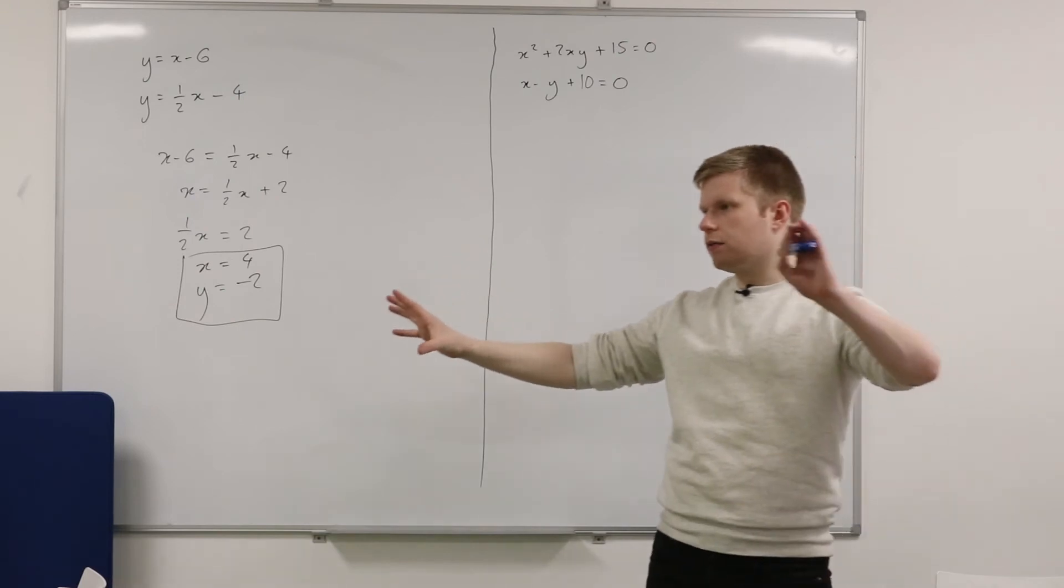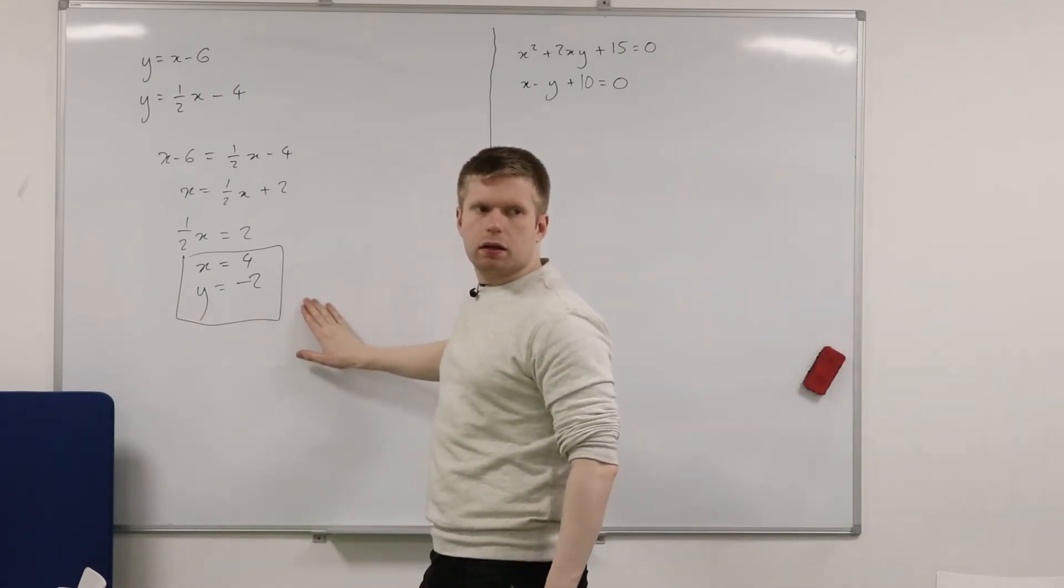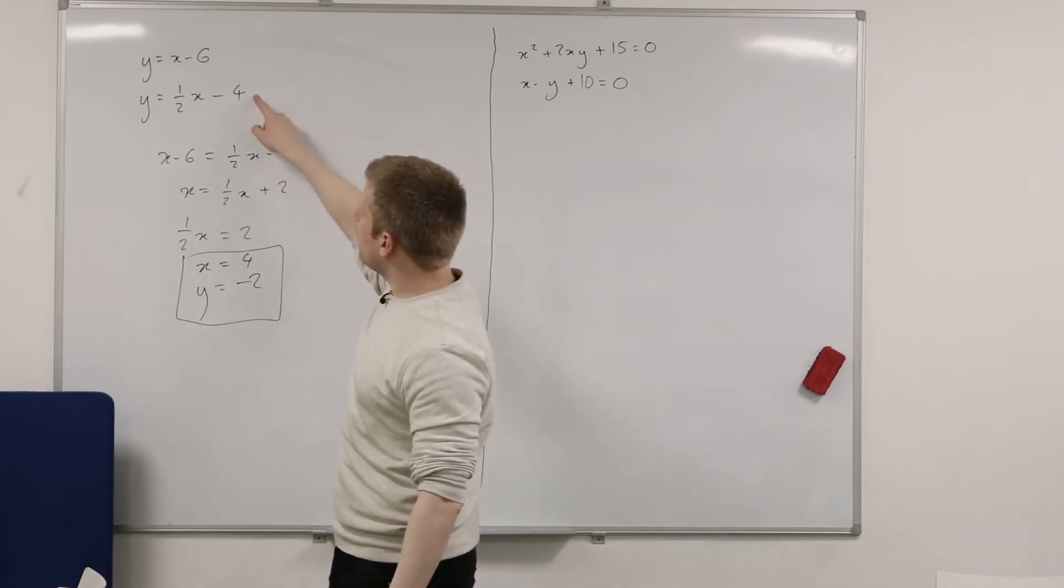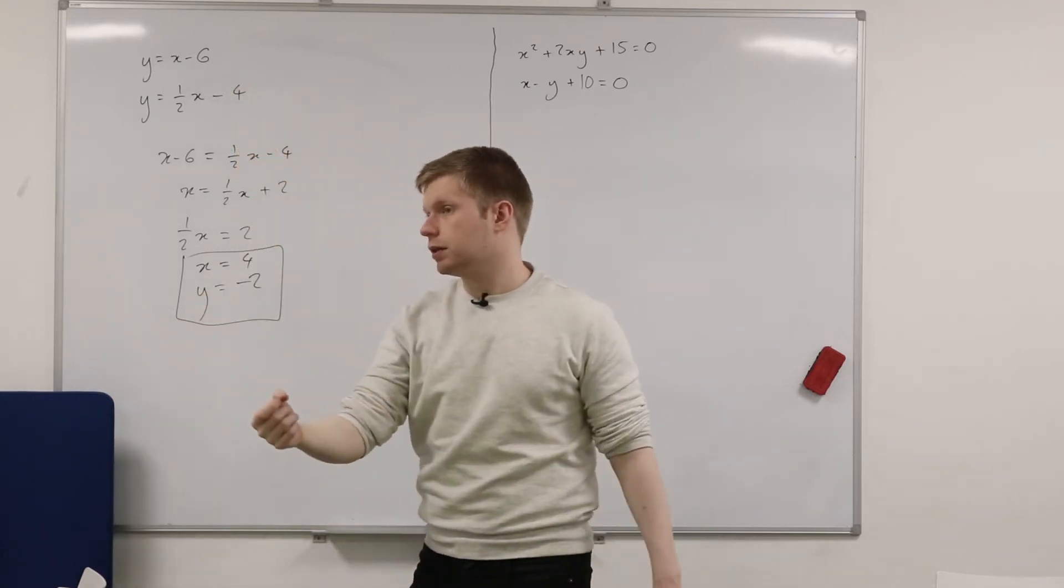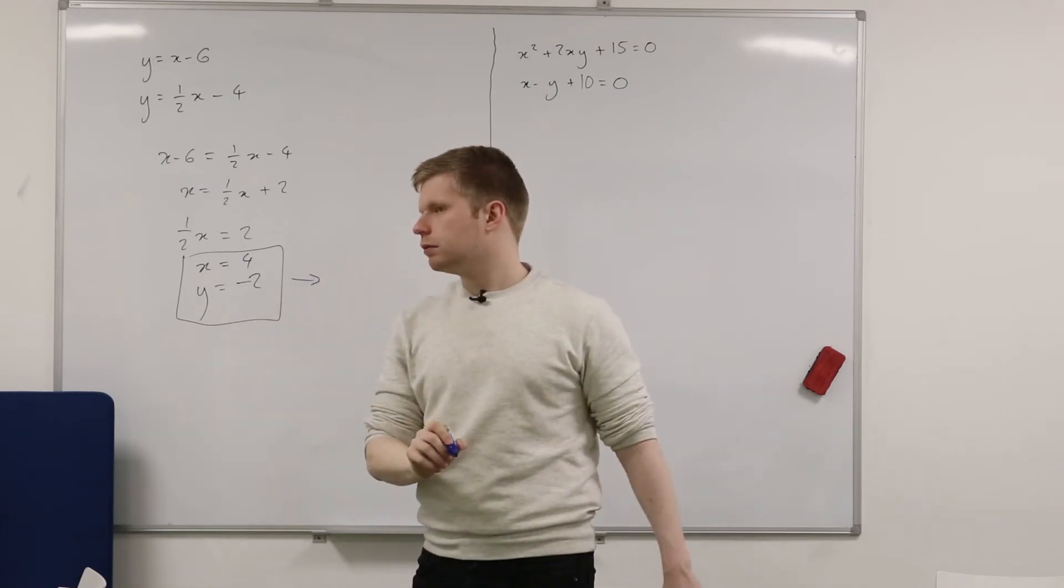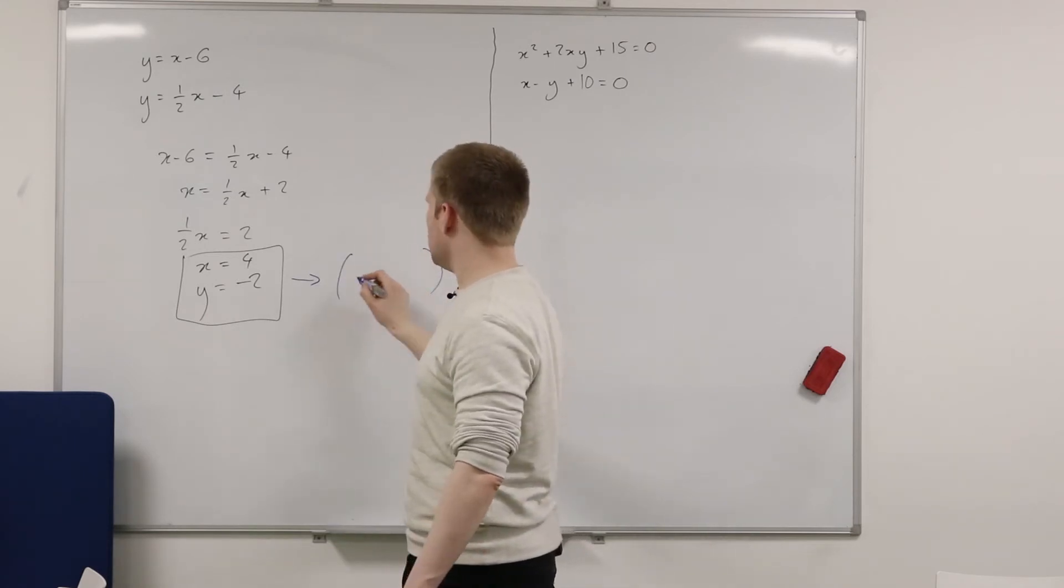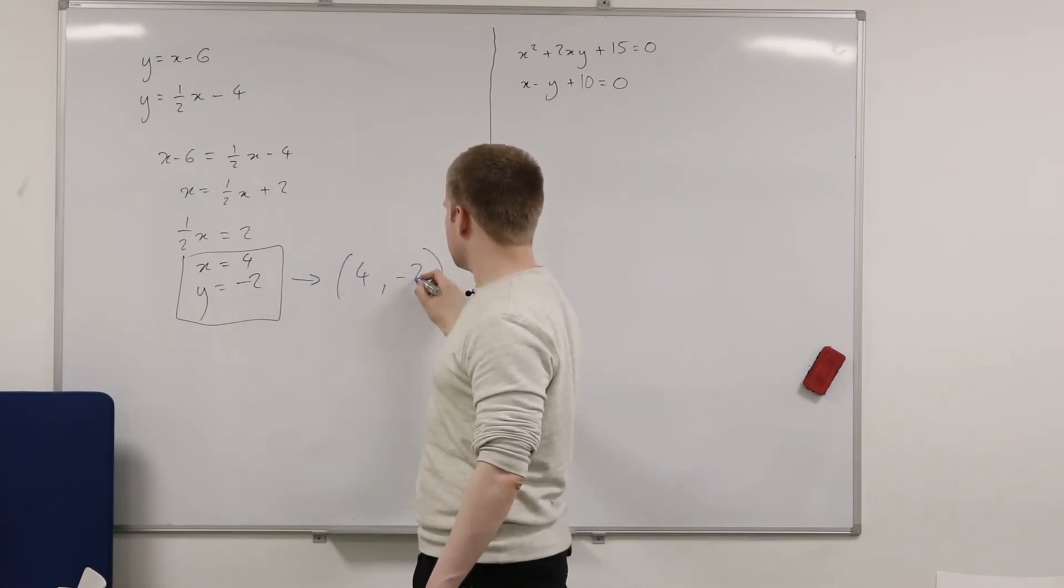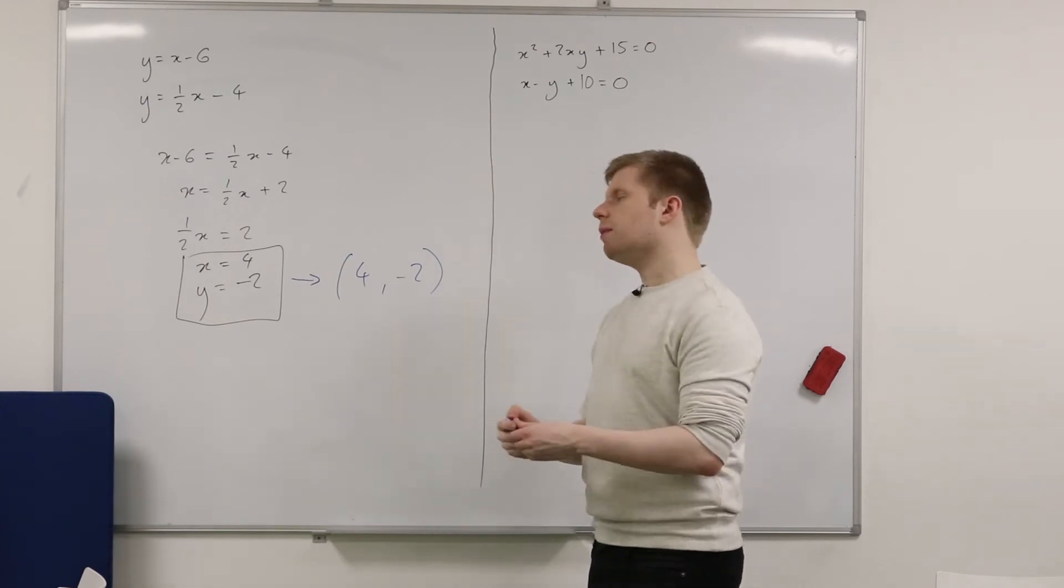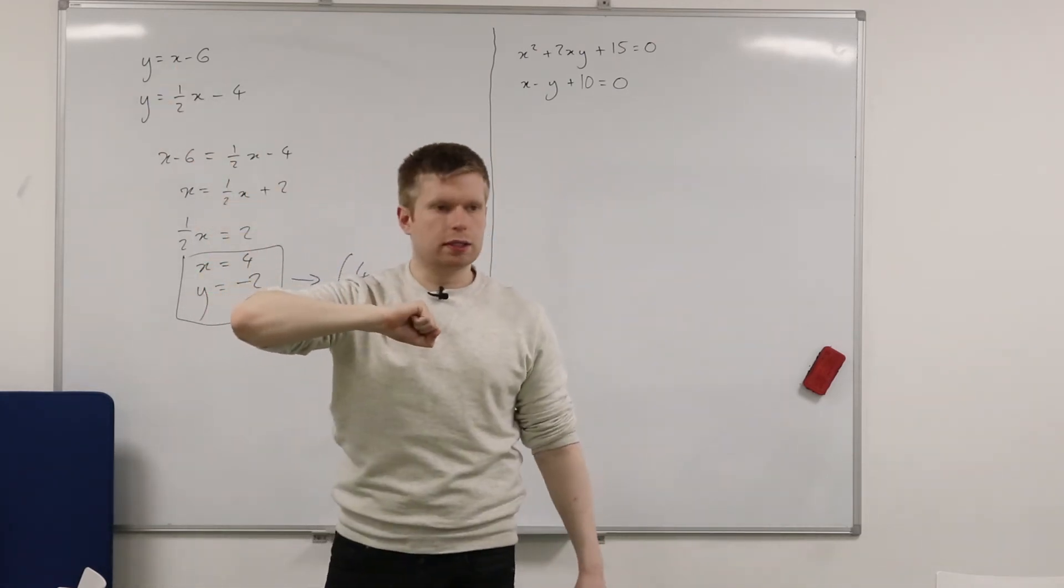Now, if I give you a value of X and a value of Y, what are you thinking about here? Remember at the start, I said that both of these equations are straight lines. They're linear equations. If I give you a value of X and a value of Y, what does that remind you of? It's coordinates, right? So I could write this as 4, negative 2. So let's think about this.